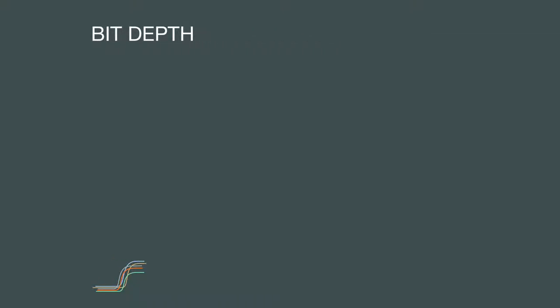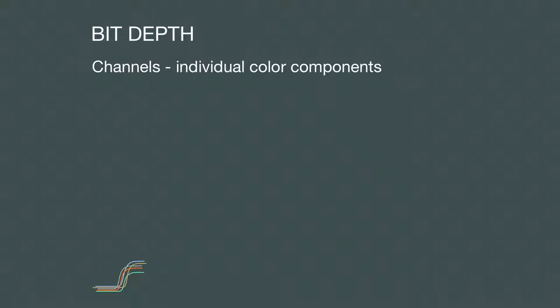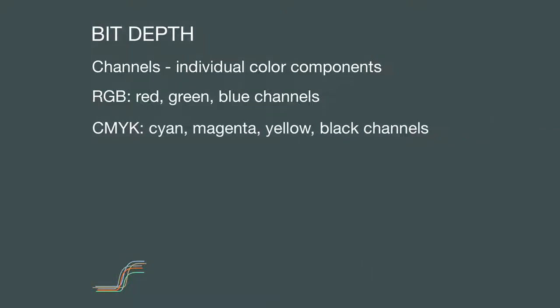In storing digital images, another factor to consider is bit depth. The individual components of a color in a particular color model are known as channels. In RGB color, red, green, and blue are the three channels. In the CMYK color model, cyan, magenta, yellow, and black are the four channels. Computers store data in ones and zeros — known as bits — and the intensity of each channel in a color is stored in bits.